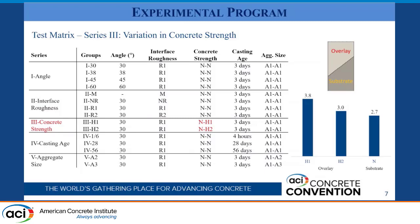For series three, we investigate different variations in concrete strength between the first layer — known as the substrate — and the overlay, which is the second layer. For our general mixture, denoted as N, we have a concrete compressive strength of 2.7 KSI. For the overlay, we tested two higher concrete strength mixes, denoted as H1 and H2, with compressive strengths of 3 and 3.8 KSI respectively.